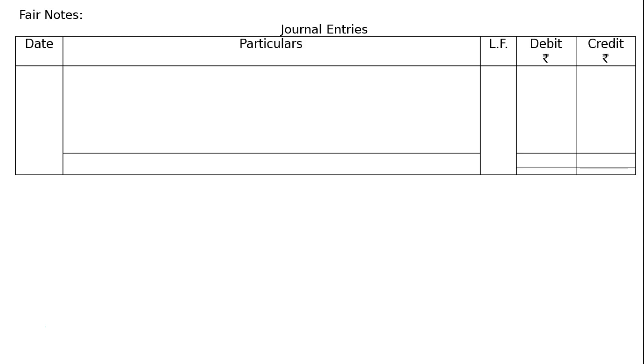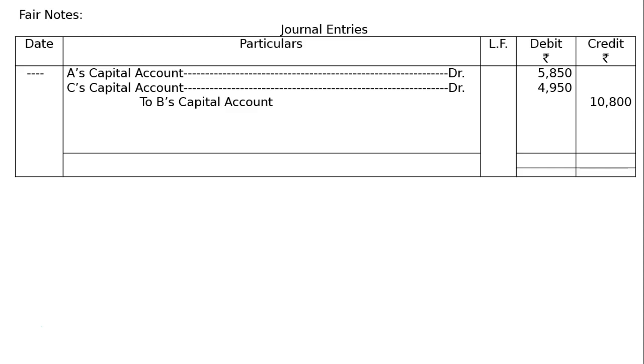Now create the journal entry format. The journal entry is: A's capital account debited Rs. 5,850, C's capital account debited Rs. 4,950, to B's capital account Rs. 10,800.